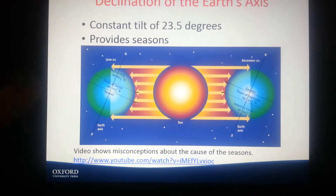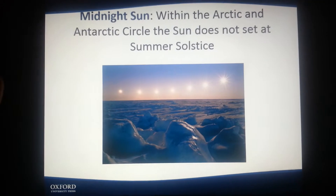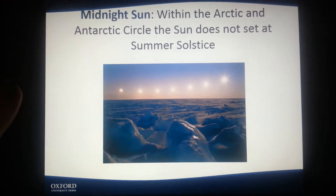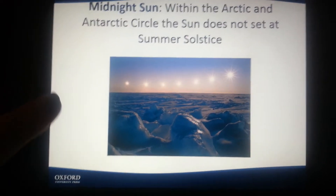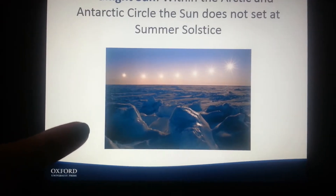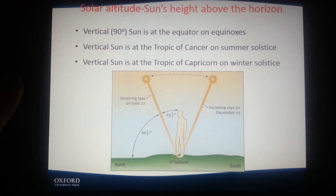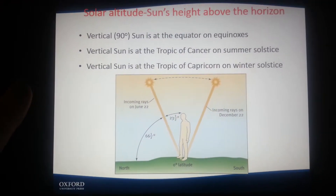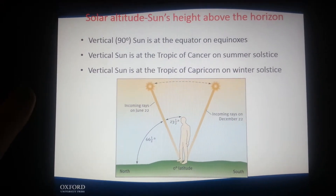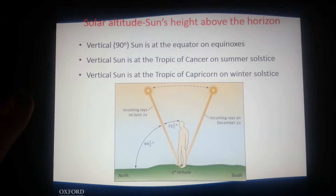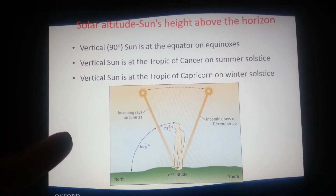There's a little video about misconceptions about the cause of the seasons. And then, midnight Sun within the Arctic — in an Arctic circle, the Sun does not set at summer solstice, as you can see. Solar altitude is the Sun's height above the horizon. The vertical 90-degree Sun is at the equator on equinoxes, and at the Tropic of Cancer on summer solstice.